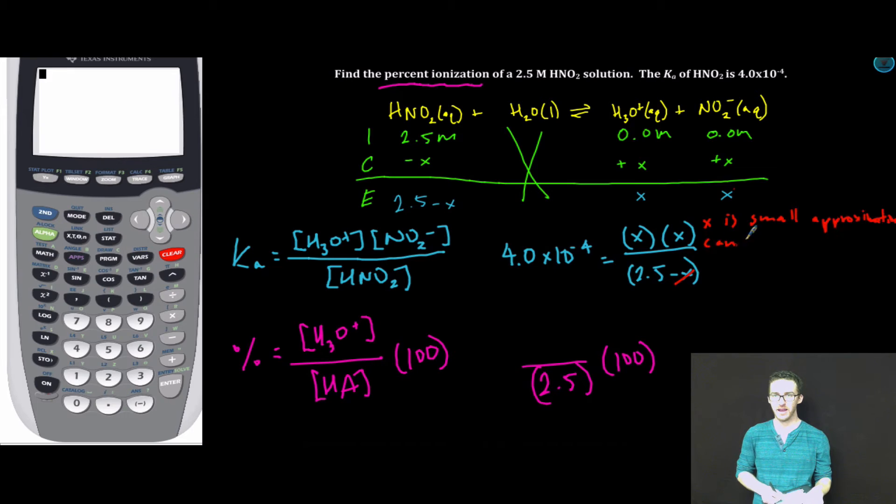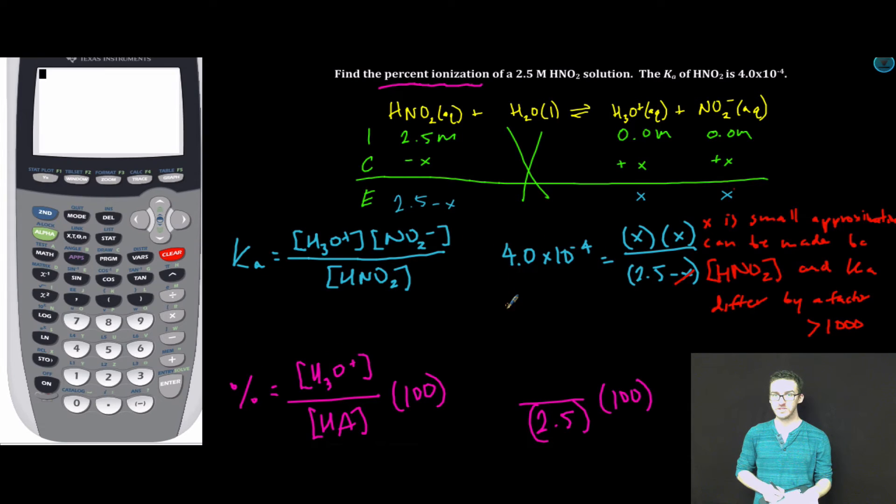I'm going to make the x is small approximation. x is small approximation can be made because initial concentration of HNO2 and Ka differ by a factor greater than a thousand. Again, always explicit. All right, that will simplify our Ka expression of 4.0 times 10 to the minus 4 equals x squared over 2.5.